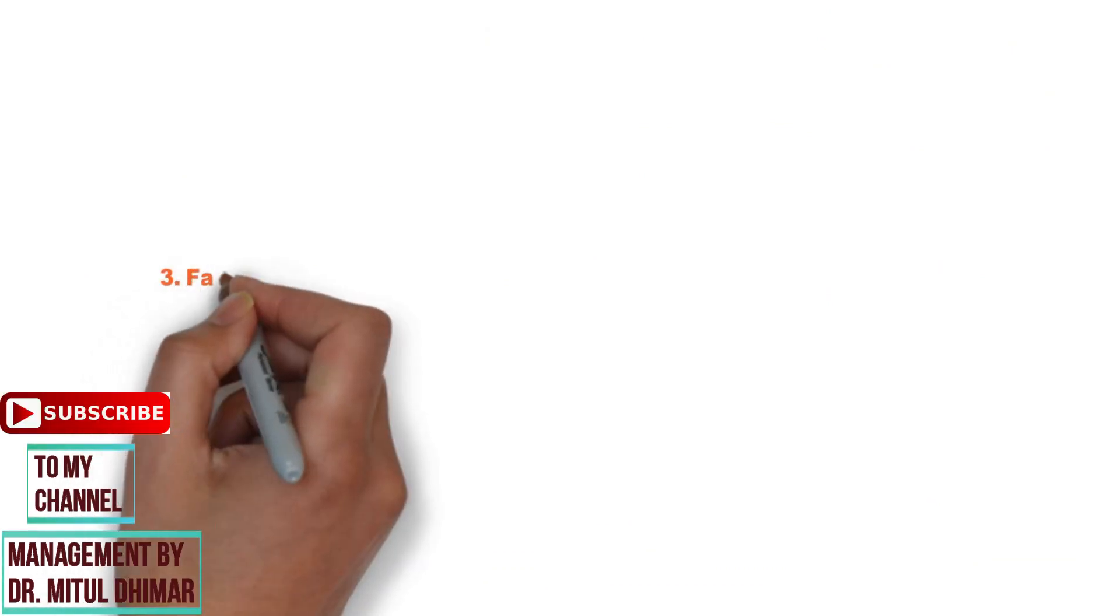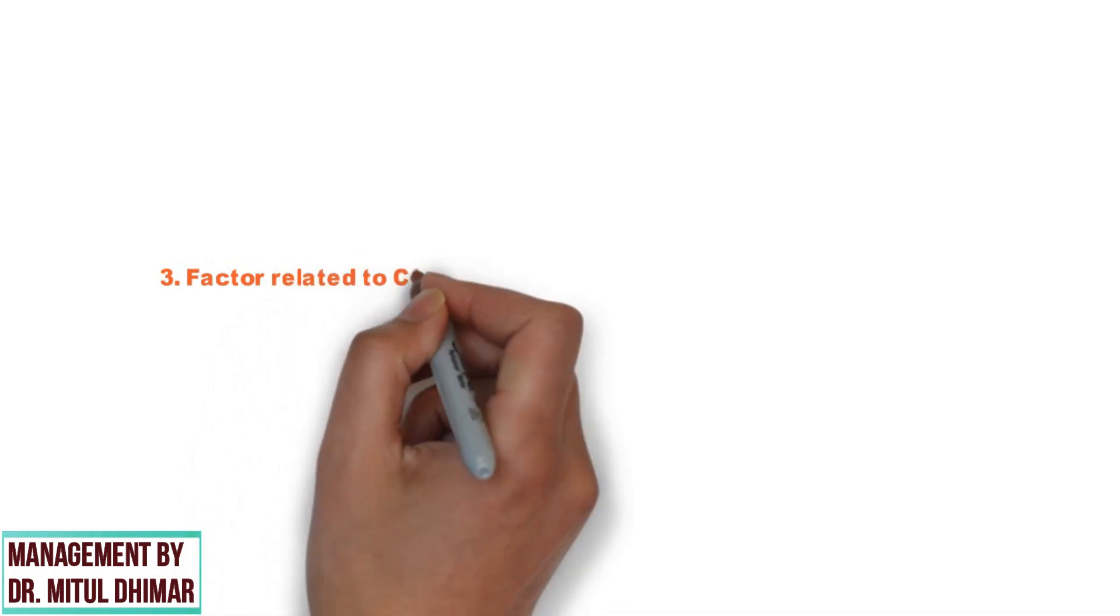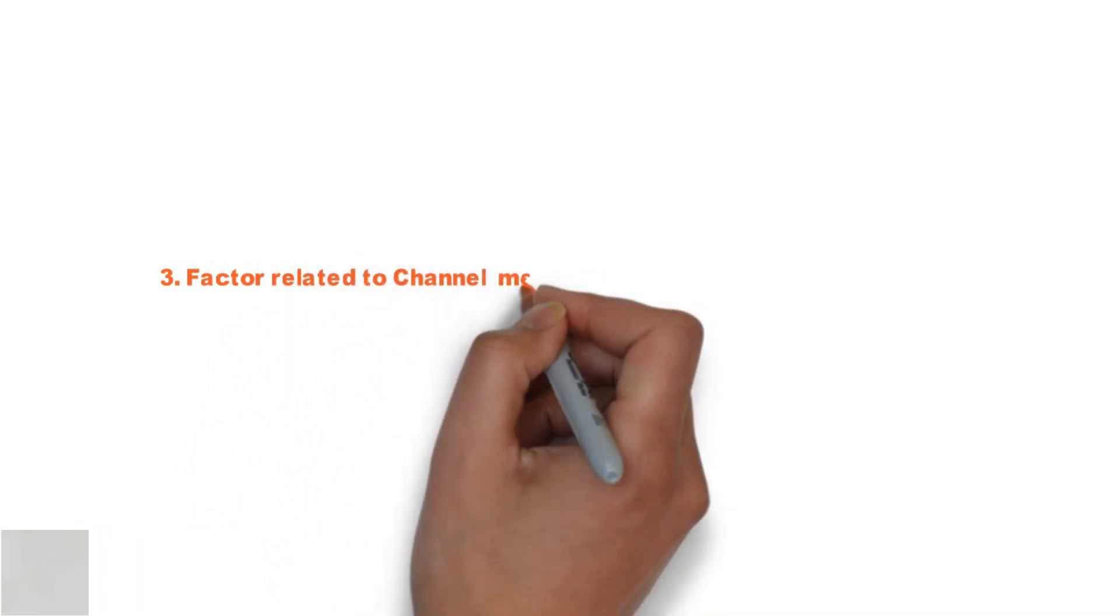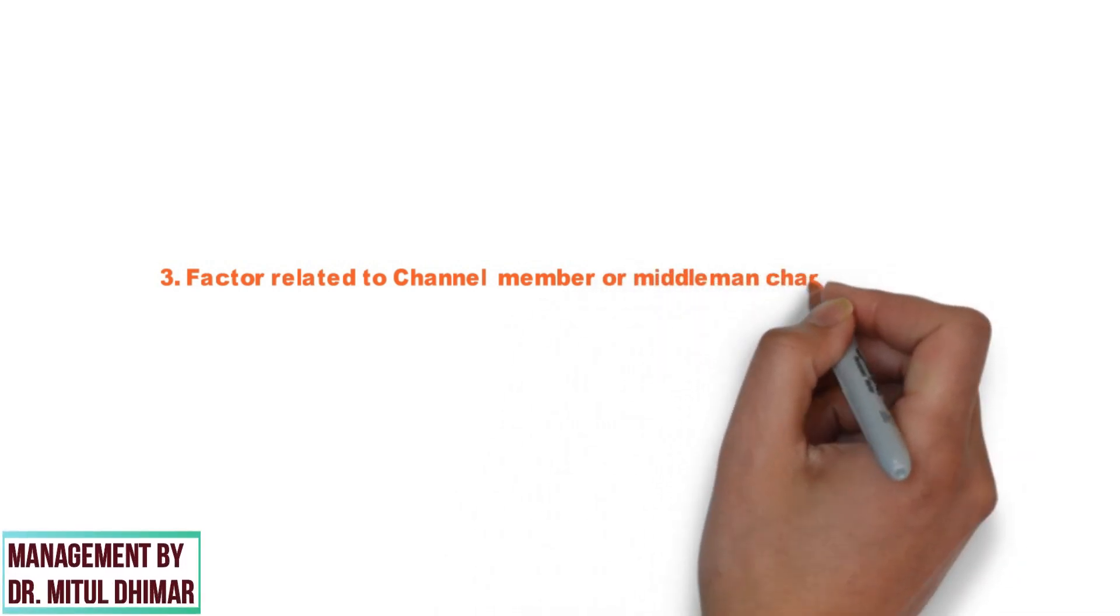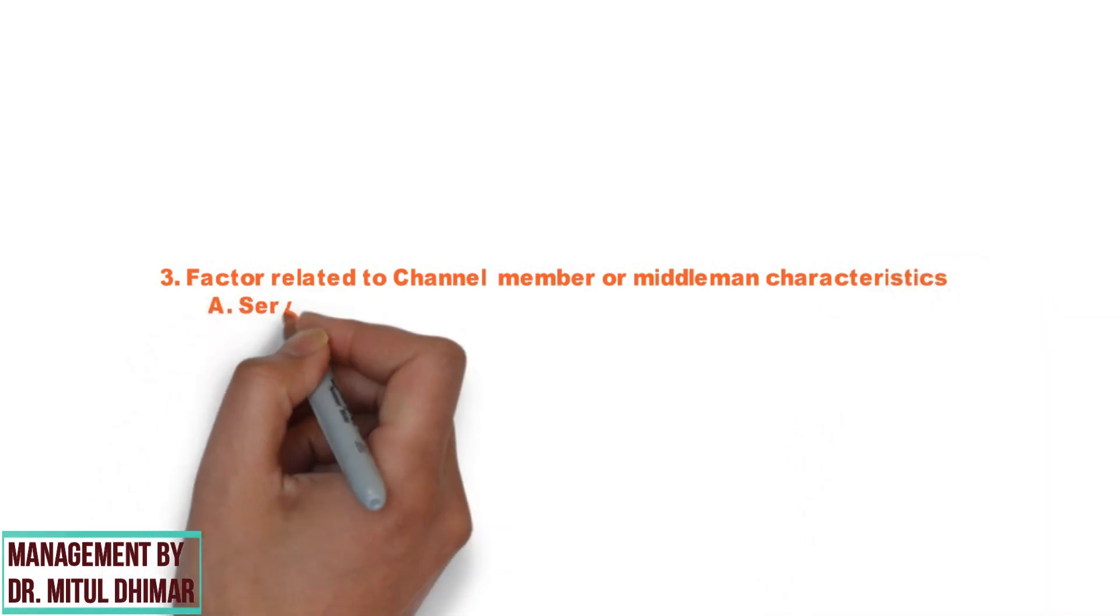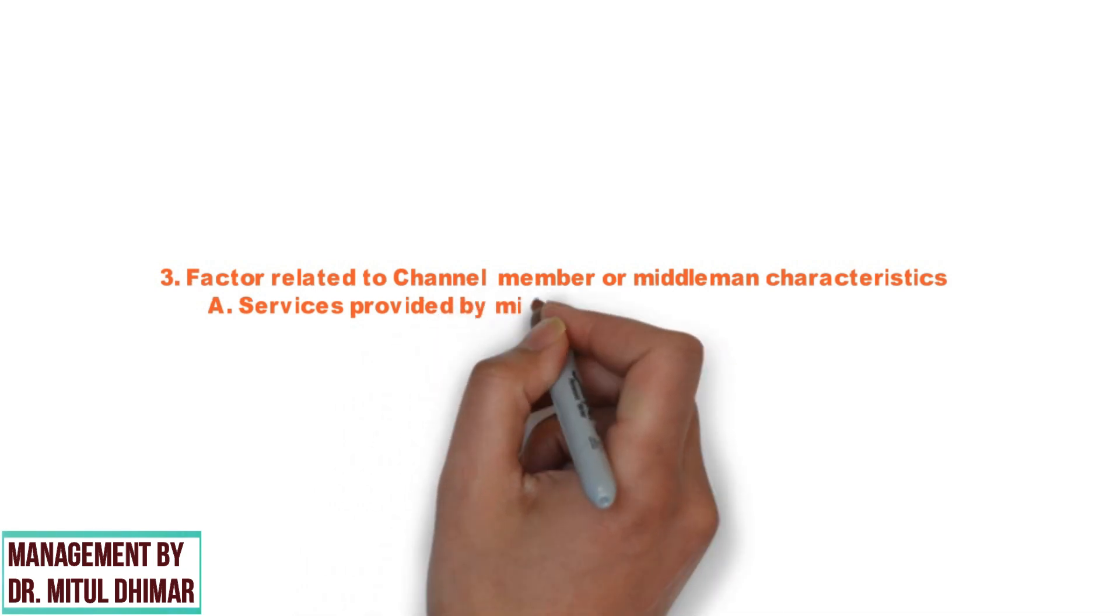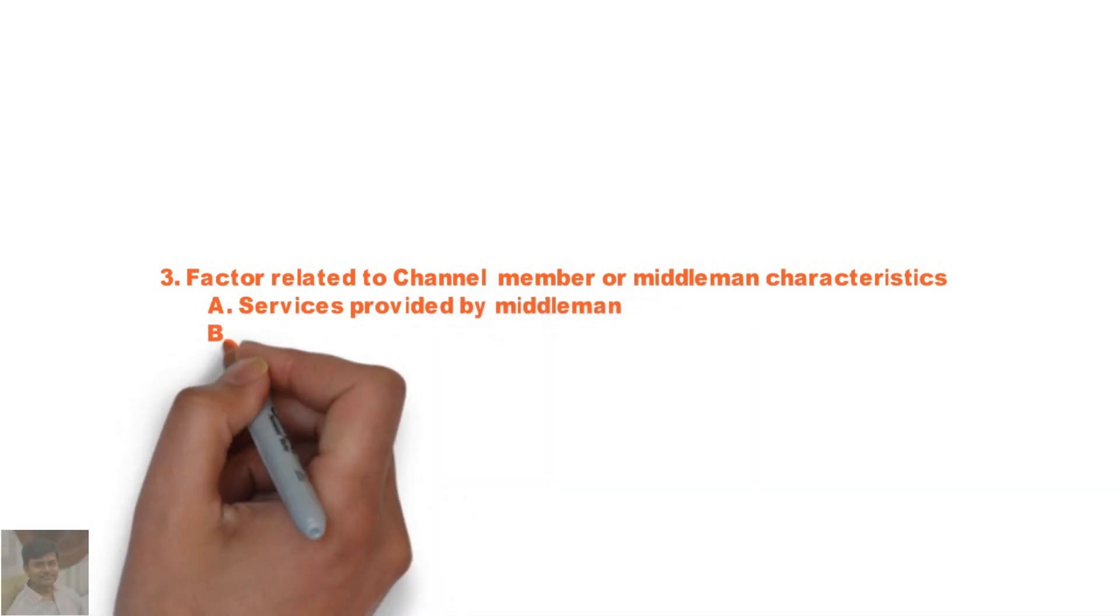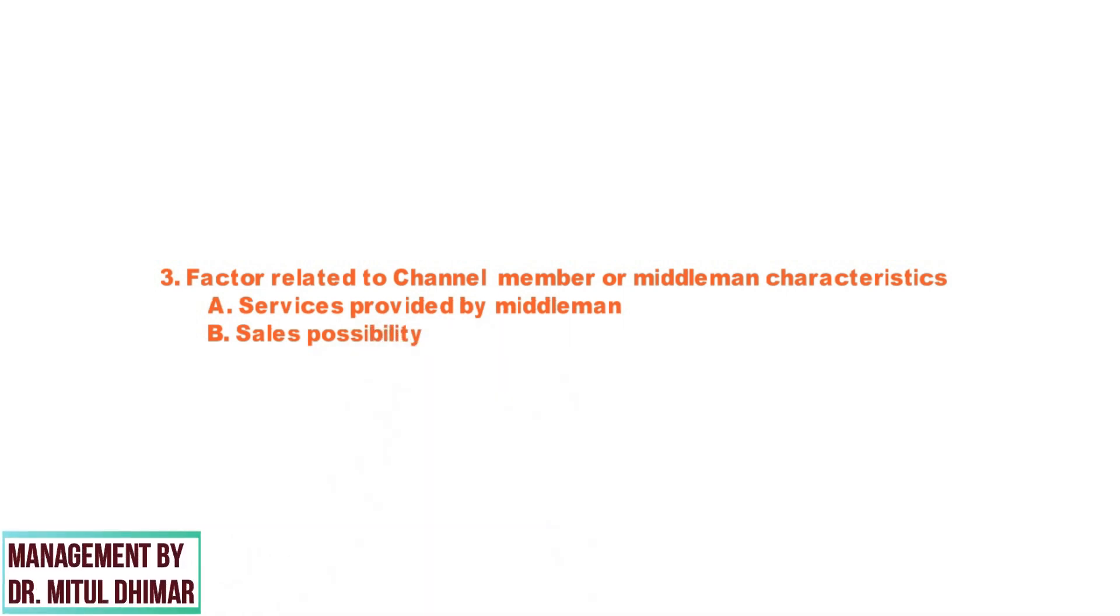Next factor is factors related to channel member or middleman characteristics. In the selection of intermediaries, the characteristics of such intermediaries is very important to make the distribution system effective. Following two characteristics we are going to study in detail: service provided by middleman and sales possibility.